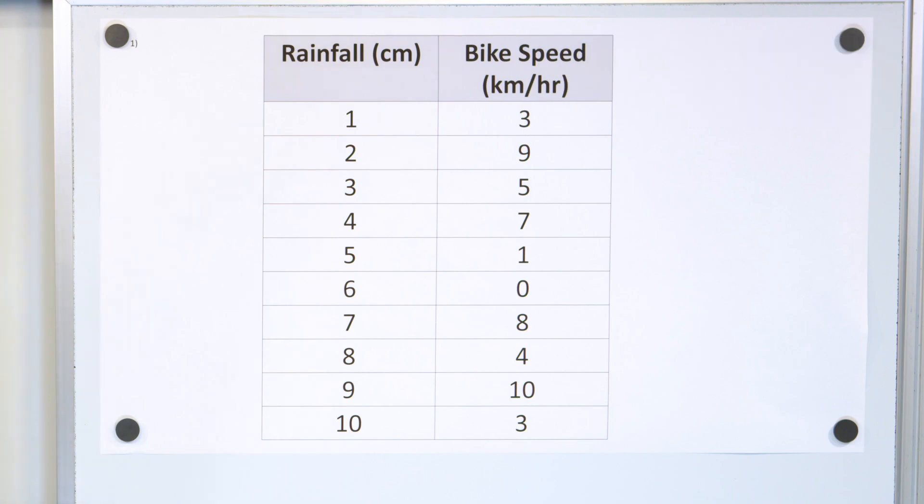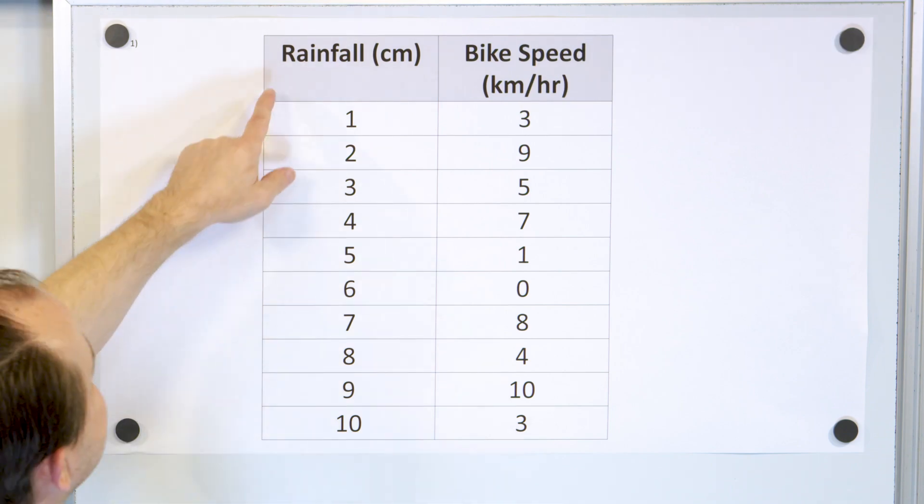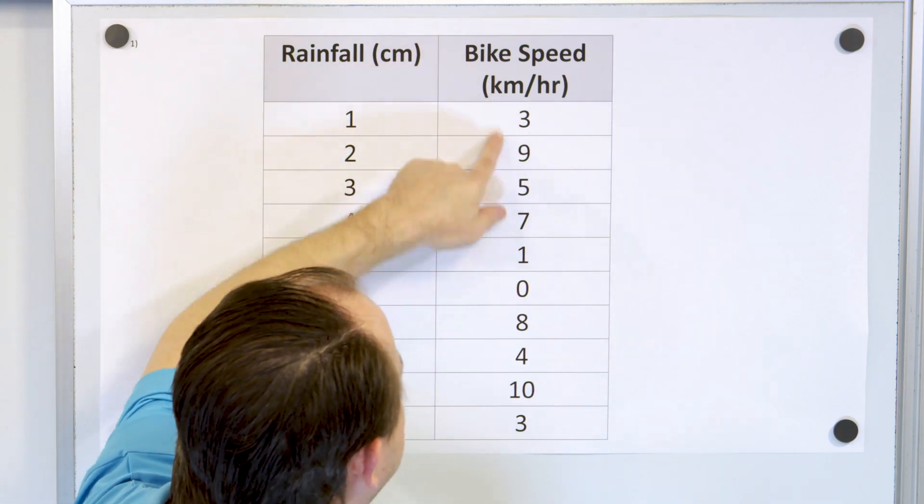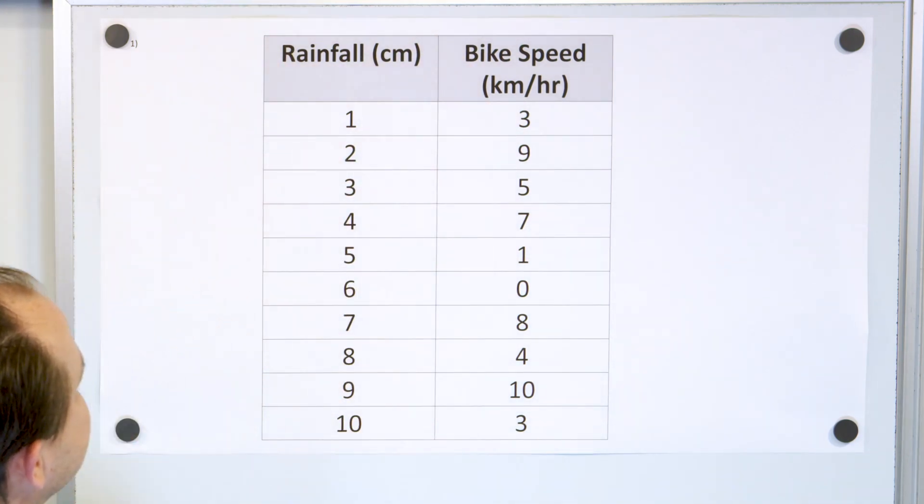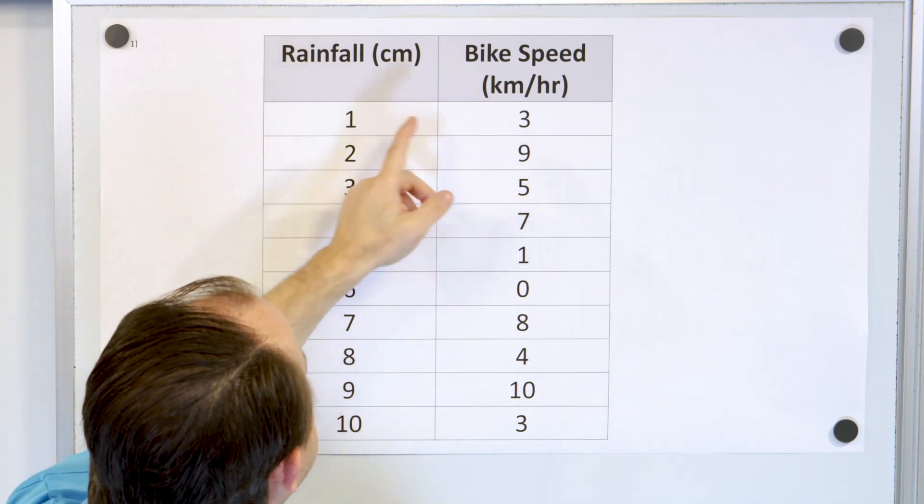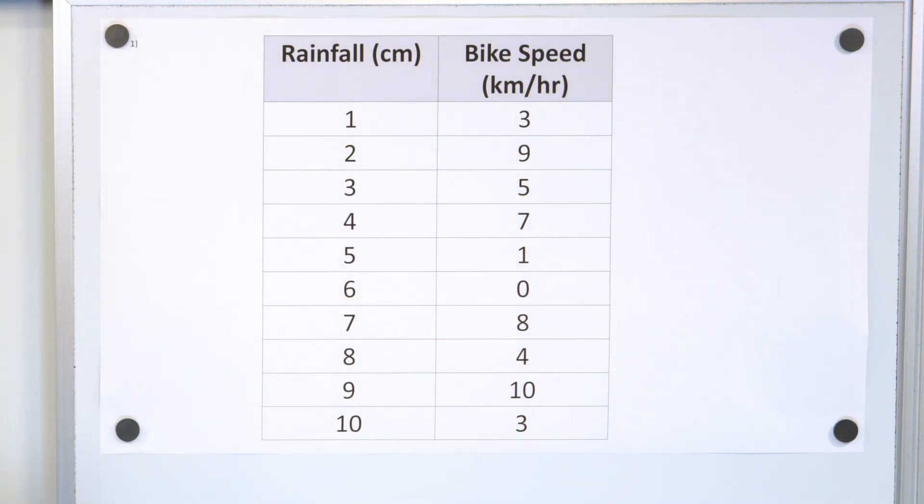Here is a table of rainfall in a city and bike speed, the average bike speed of people riding bikes in that city. One city has one centimeter of rainfall and the bike speed is three kilometers an hour, and so on. This data doesn't seem to be very connected to each other, but who knows?